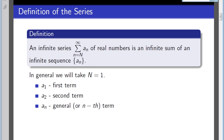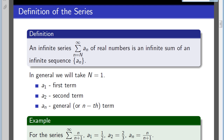After the definition, it's a good idea to have an example of a series. We consider a very simple case: for the series n over (n+1), we say that a sub 1 equals 1 over 2, which is the first term; the second term a sub 2 is 2 over 3; and the general term a sub n equals n over (n+1). Since we have an infinite sum — either sigma n over (n+1) or the general sigma a_n — we may need to know whether this infinite sum equals a unique real number or not. If it equals, we say the series converges; if not, we say the series diverges.